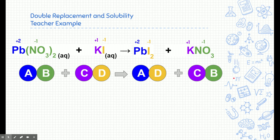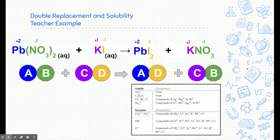Now let's determine the solubility of the products. PbI₂: iodide appears on the soluble side, but lead (Pb) is an exception, making it insoluble — so PbI₂ is an insoluble precipitate that forms a solid. KNO₃: NO₃ is on the soluble side and has no exceptions regardless of what's attached, so KNO₃ is aqueous.